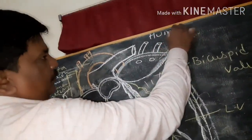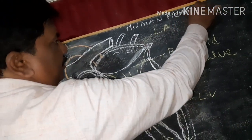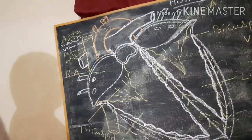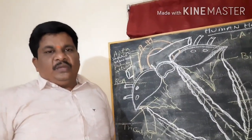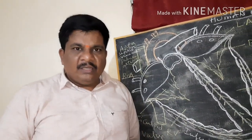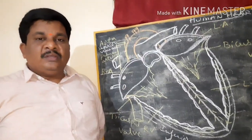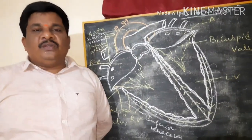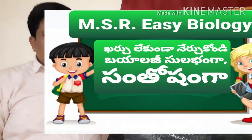This is about the diagram of the human heart — internal structure. Friends, I hope you understand this video. If you like my video, please like and subscribe to my channel, and share and watch all my videos. Thank you for watching this channel — this is MSR Easy Biology, target 10th class. Thank you.